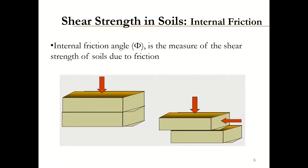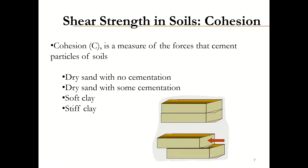Soil is not a single block — there are many particles in a soil sample and there will be interaction between the soil particles. For failure to occur, the bonding between these particles has to be overcome. For coarse-grained soils like sandy soil, the bonding is basically from the friction between the particles, and the internal friction angle for coarse-grained soil is higher, which is the measure of shear strength due to friction. For fine-grained soils, there is some attraction between the particles called cohesion. These two — angle of internal friction and cohesion — are the shear strength parameters.